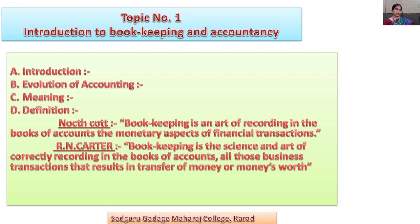In earlier times of civilization, accounting was done by agents who managed the properties of wealthy people. They prepared accounts periodically for the owners of the property.